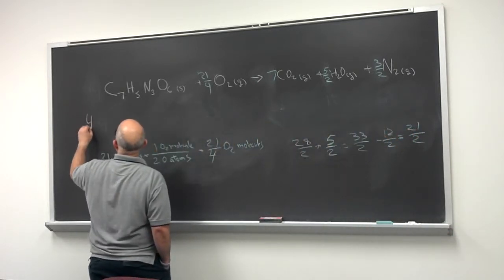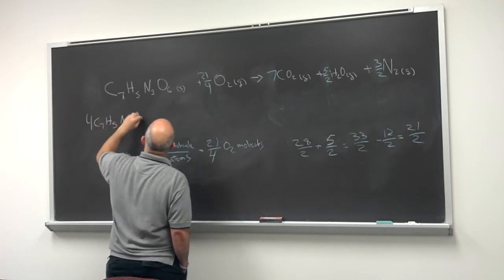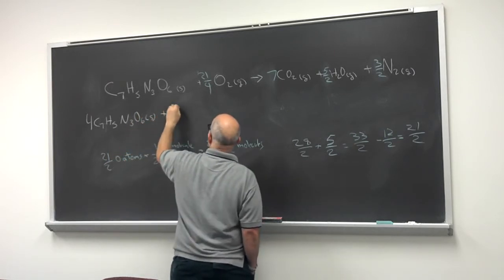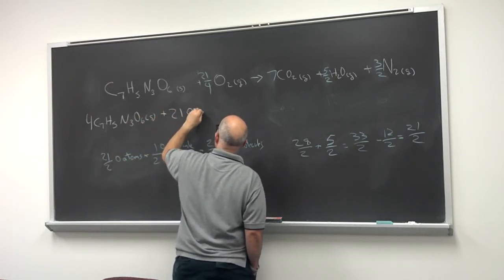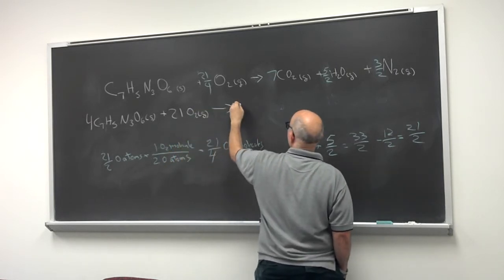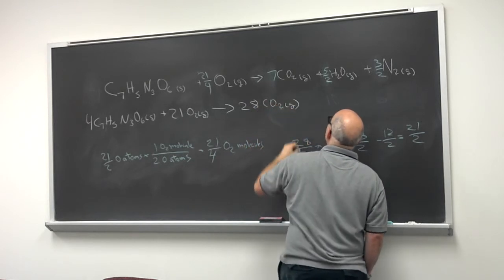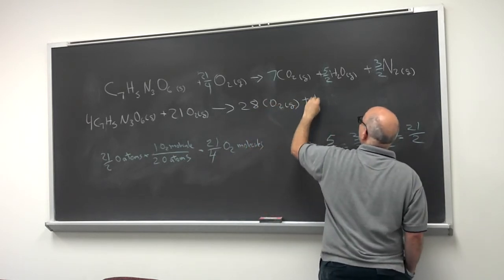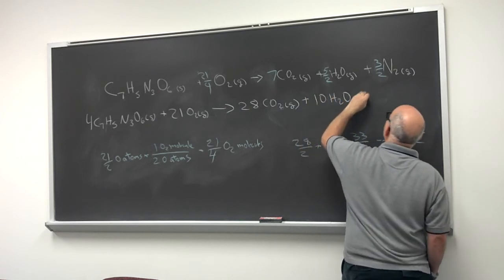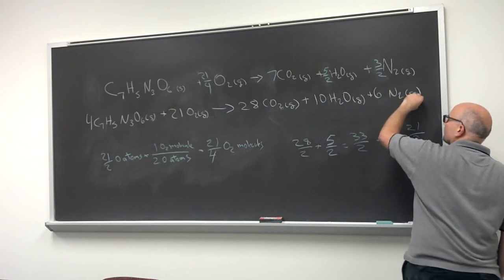So we are going to have 4 TNT molecules and 21 oxygen molecules. And that's going to give us 7 times 4, or 28 CO2 molecules, 10 water molecules, and 6 nitrogen molecules. And we're balanced.